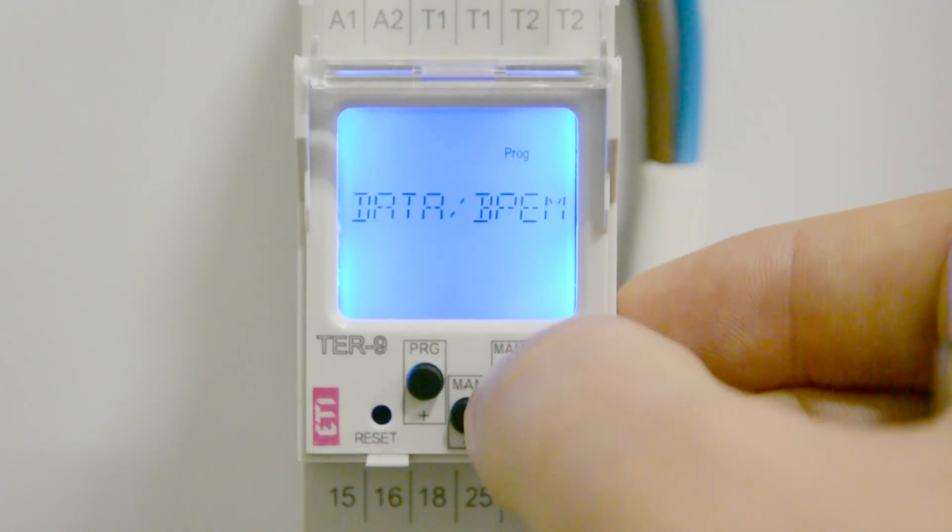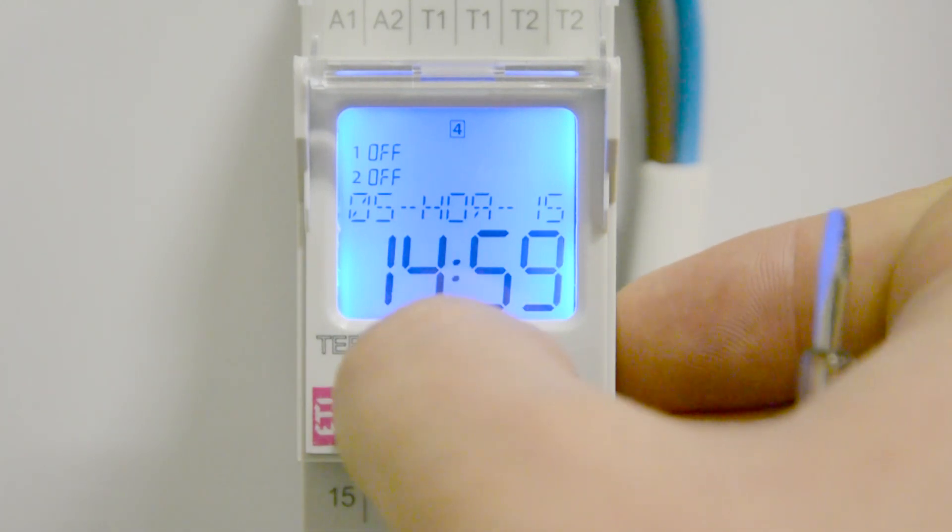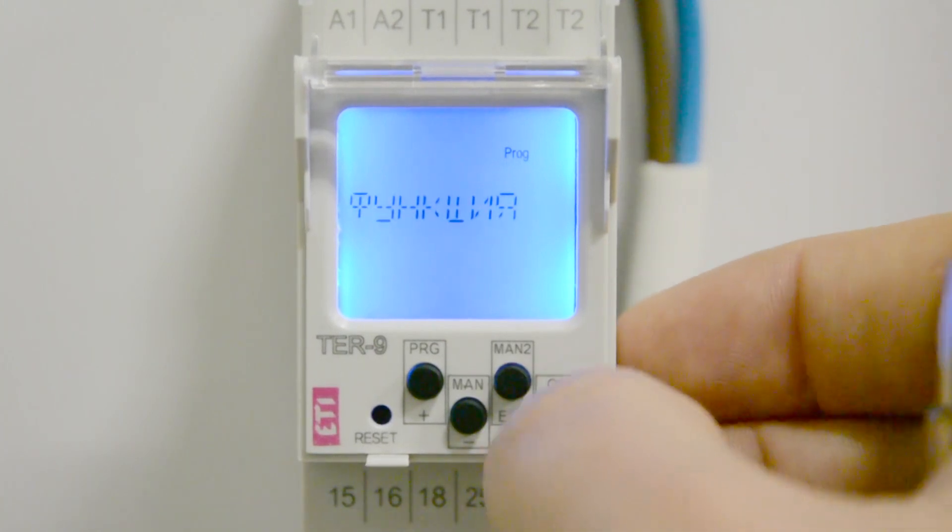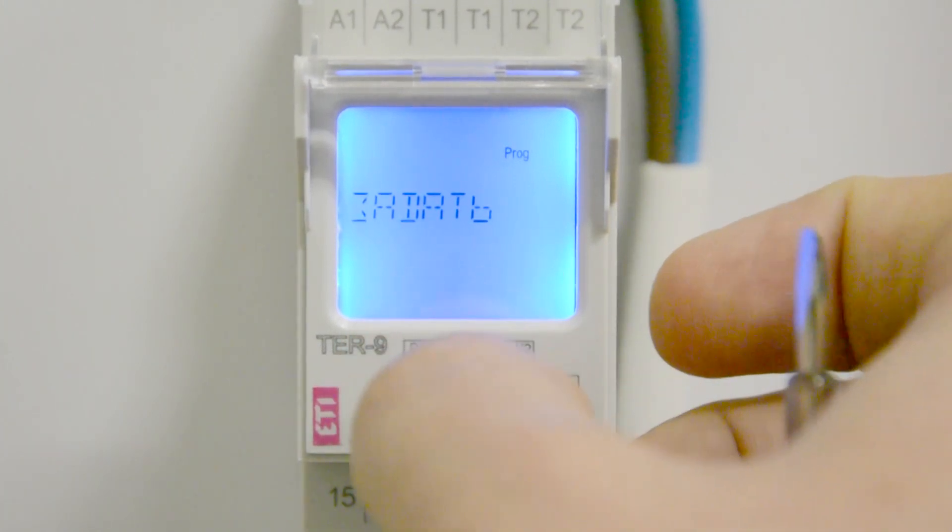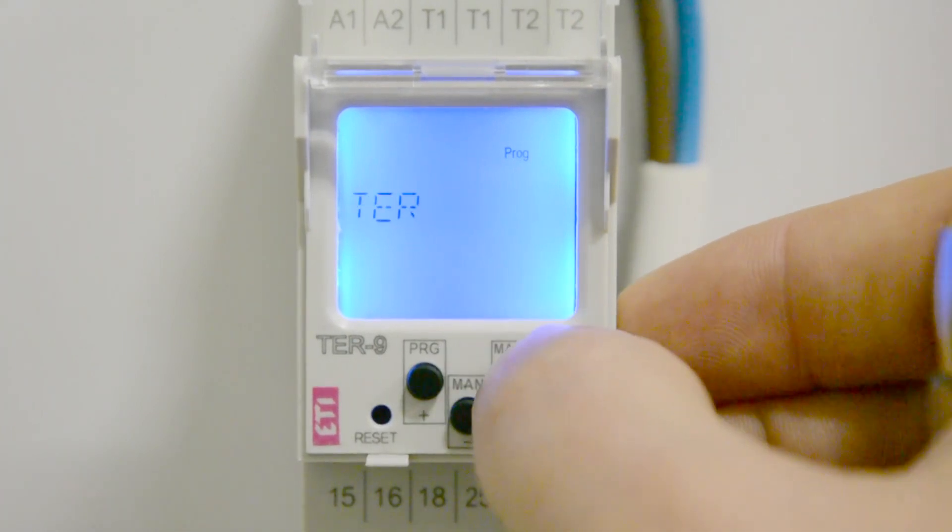The device has six preset thermostat control functions. To select them, we go to the TR menu, and in the function submenu we select the appropriate function. A detailed description of functions is in the thermostat manual.